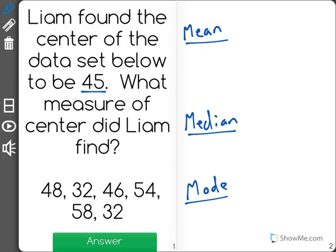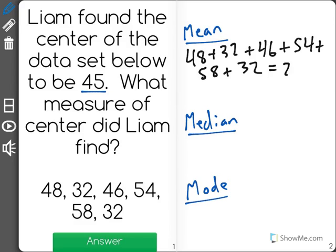Let's start with the mean. The way we find the mean is we take every number in the data set and we add them together. That's our first step. And in this case we get 270.